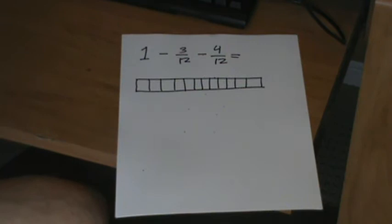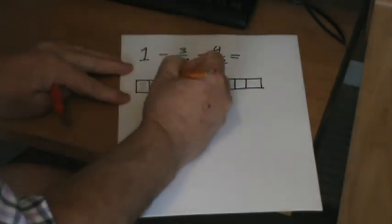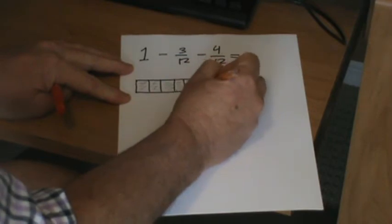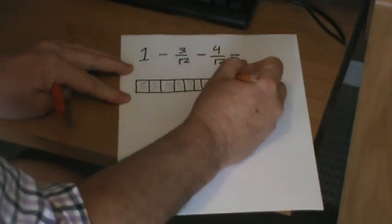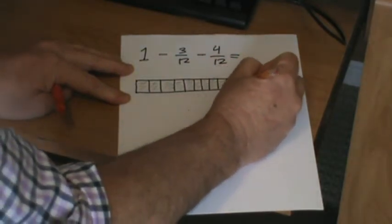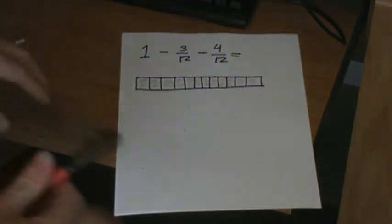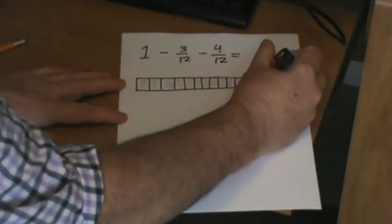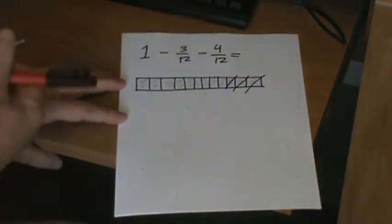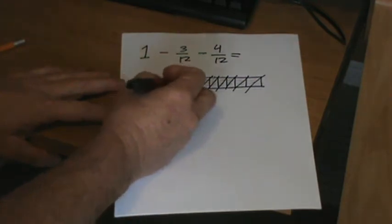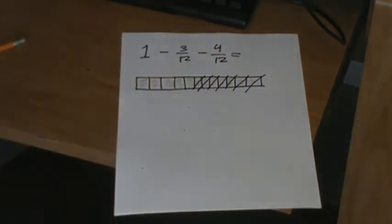It's 1 whole, so we're going to shade in all the units. So we have them all shaded in. And let's subtract 3. 1, 2, 3. And then we'll subtract 4 more. 1, 2, 3, 4. So we should have 1, 2, 3, 4, 5/12, if our problem works.